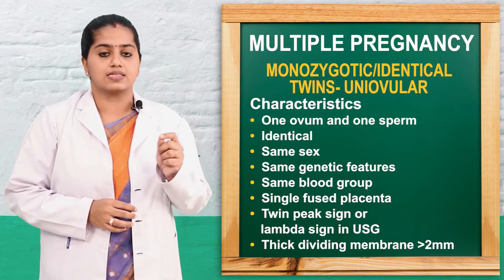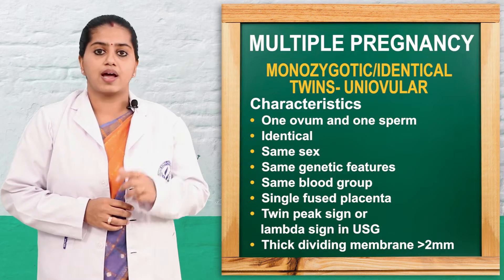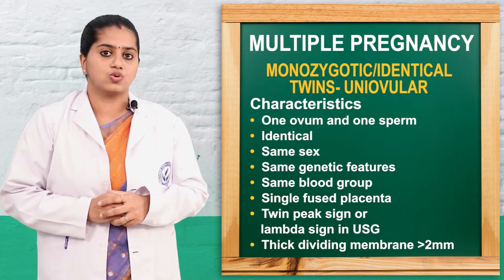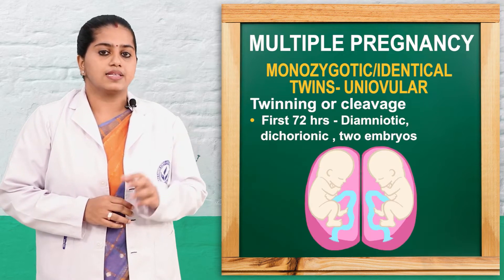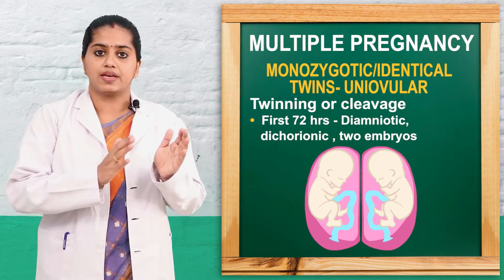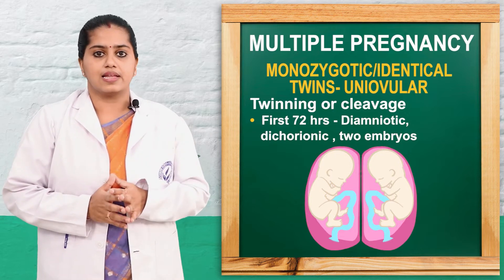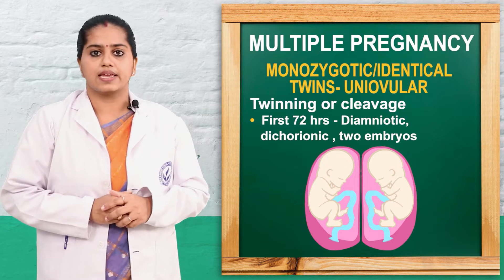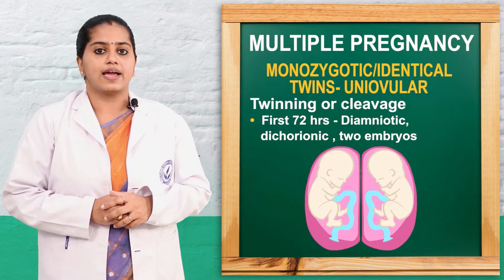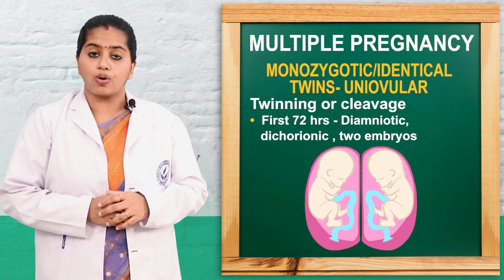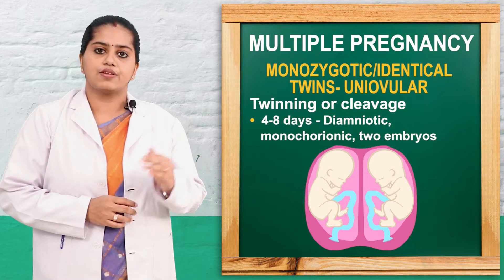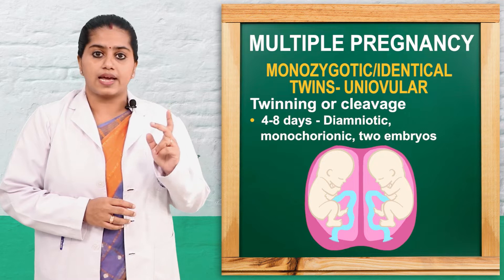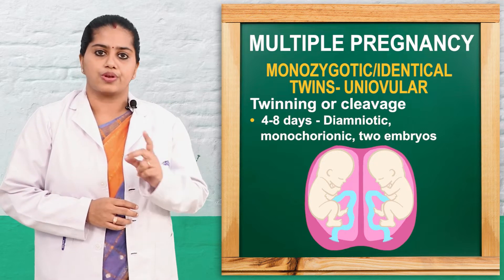A single fused placenta is formed. In ultrasonography, the lambda sign can be seen and the membrane thickening will be more than 2 mm. The twinning process can happen early or late. If it occurs at 0 to 3 days, they go with diamniotic dichorionic — 2 amnion, 2 chorion layers. If it happens at 4 to 8 days, they go with diamniotic monochorionic — 2 amnion, 1 chorion.